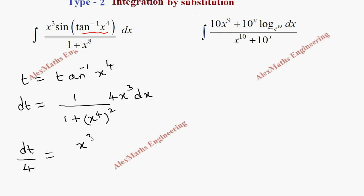That is dt by 4 equal to x cube dx by 1 plus x power 8. Now we have this x cube dx by 1 plus x power 8. This entire term can be replaced as dt by 4.